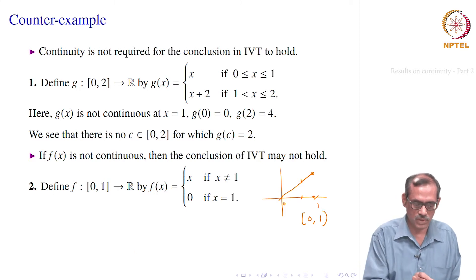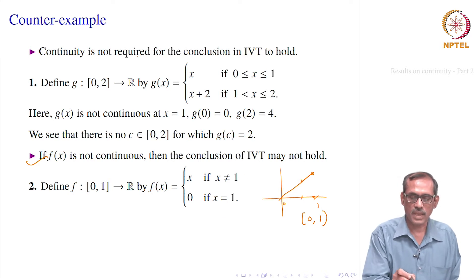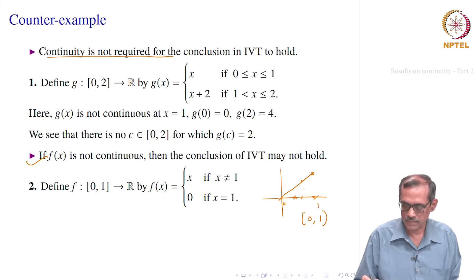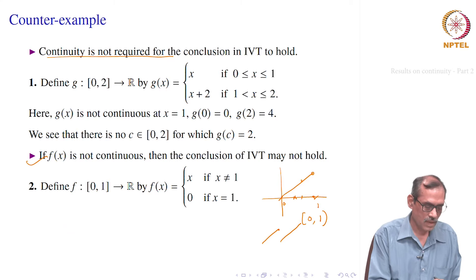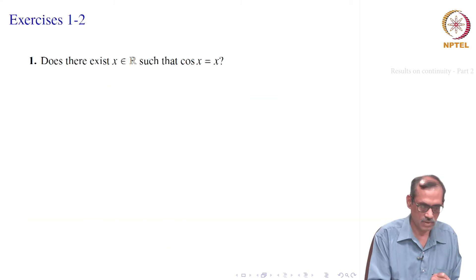So the first example shows that if f(x) is not continuous, then the conclusion of IVT may not hold. The second example says continuity is not required for the conclusion in IVT to hold. Of course, you can give similar examples even at an interior point — a function defined differently at two pieces, including only one of them at the break point. There also, the IVT conclusion will hold but the function is not continuous at that point.